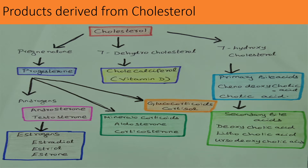The various products derived from cholesterol include: from cholesterol we get progesterone, and from progesterone we get androgen, estrogen, mineralocorticoids and glucocorticoids. An example of a glucocorticoid is cortisol. For mineralocorticoids: aldosterone, corticosterone, and the androgens — androsterone, testosterone. Estrogens include estradiol, estriol, and estrone.